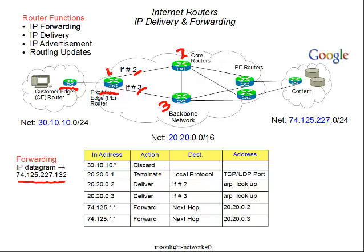The second test is whether the packet is destined for the router itself. Examples of packets destined for the router from the customer network would be ICMP messages — that is test messages like ping — and route trace messages. Those are messages sent to the local protocol. The third case is where the destination is for the Google content data center. In the address table there's a 74.125 entry, and that entry would cover all addresses within that range. The action to take is to forward to the next hop, so IP routing in this example is done on a hop-by-hop basis.